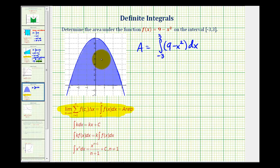Now I should mention that because this region is symmetrical across the y-axis, meaning if we drew a line at x equals zero, the area on the left and the area on the right would be the same. We could integrate from zero to three and then multiply the definite integral by two, meaning we could determine the area by doubling the integral from zero to three of nine minus x squared with respect to x.